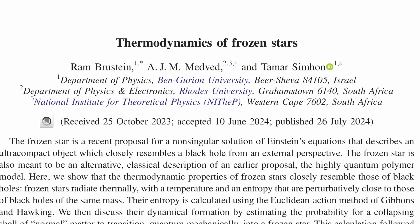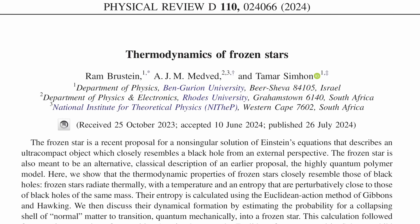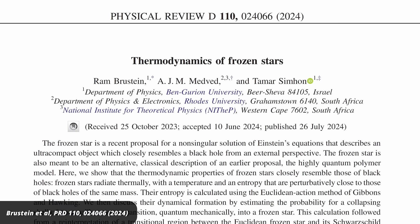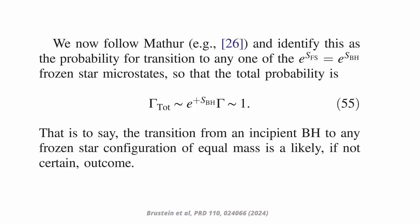The new thing about this paper is that they calculate the probability for a collapsing ball of matter to transition into such a quantum state. They say that while the probability of it transitioning into any one particular state is very small, there are also a huge number of these states. And if you multiply both factors, that gives you a probability which is close to 1, so it's a very likely thing to happen.